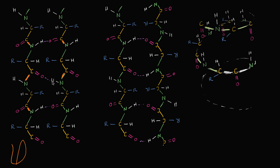What you see happening is from these two chains, the backbones are interacting. I just put an R here for the different side chains. Right over here we have nitrogen — nitrogen is electronegative, it would hog the electrons from the hydrogen, so the hydrogen is going to have a partially positive charge. Oxygen is electronegative, it's going to hog the electrons from the carbon, so it's going to have a partially negative charge. And so this hydrogen and this oxygen are going to be attracted to each other — this is a hydrogen bond. The same thing is going to happen over here, and so these two chains can form a sheet. In fact, it's called a beta-pleated sheet.